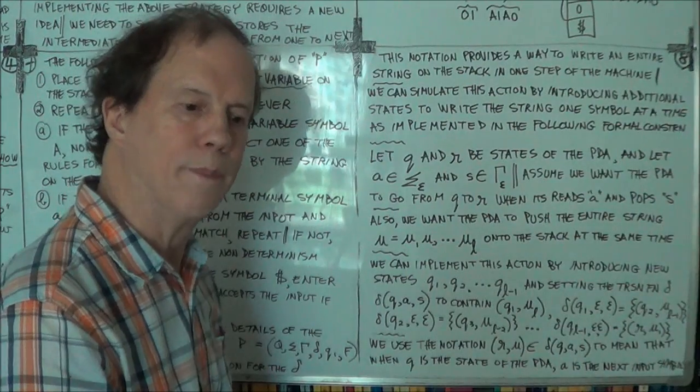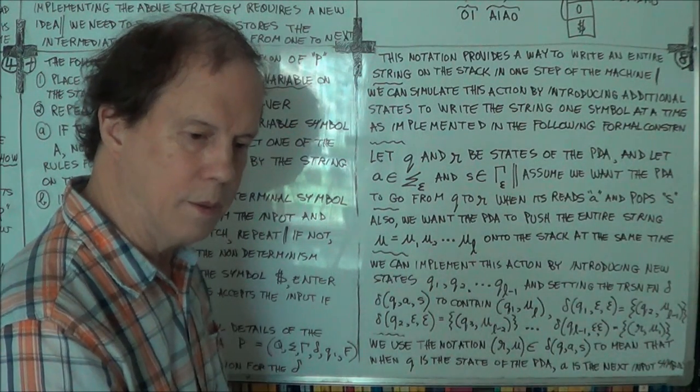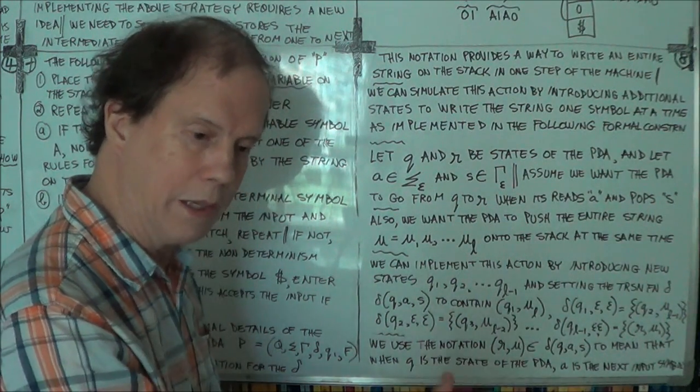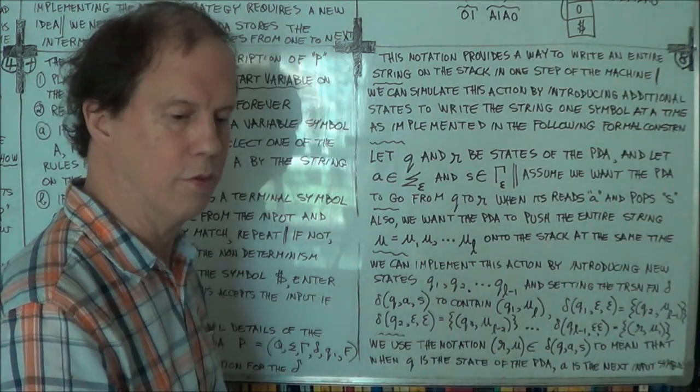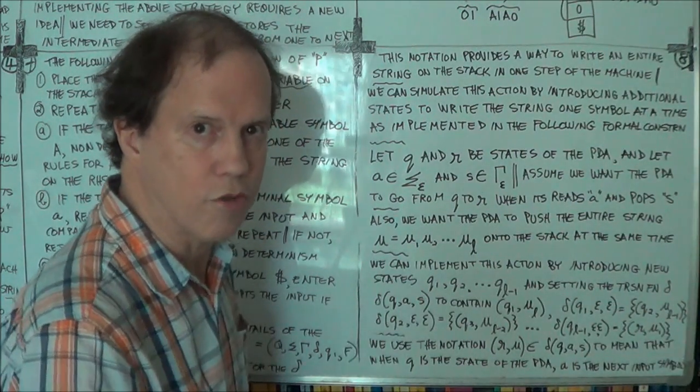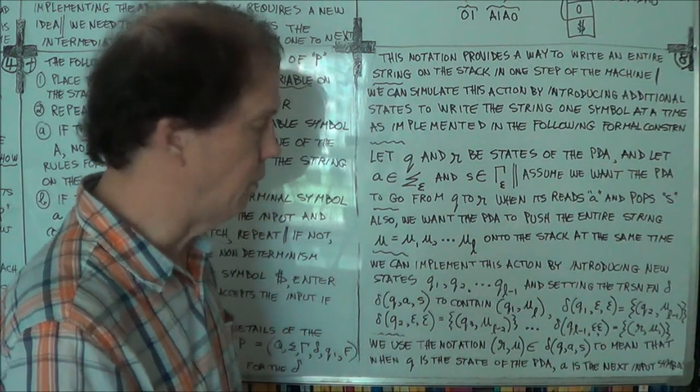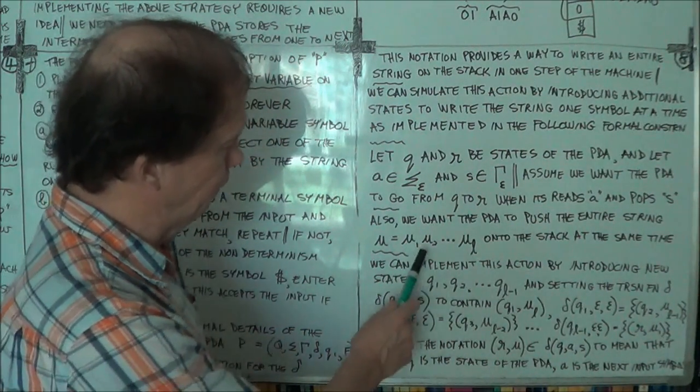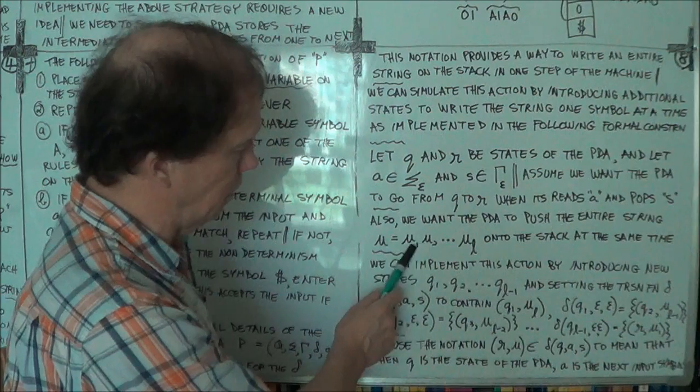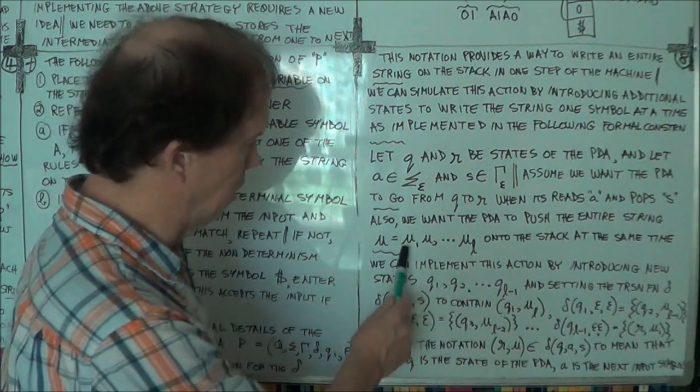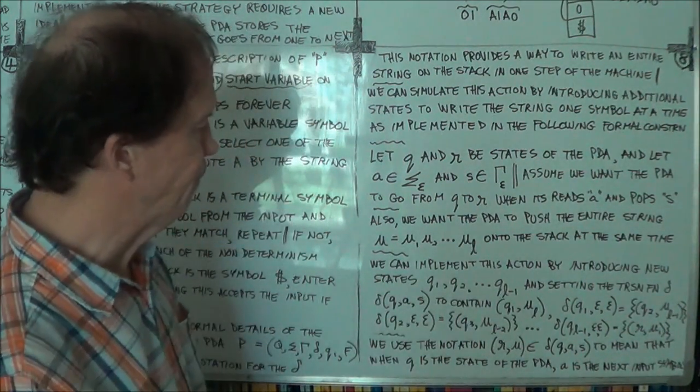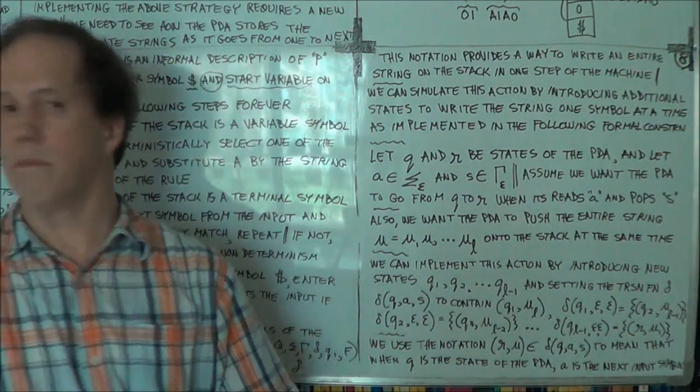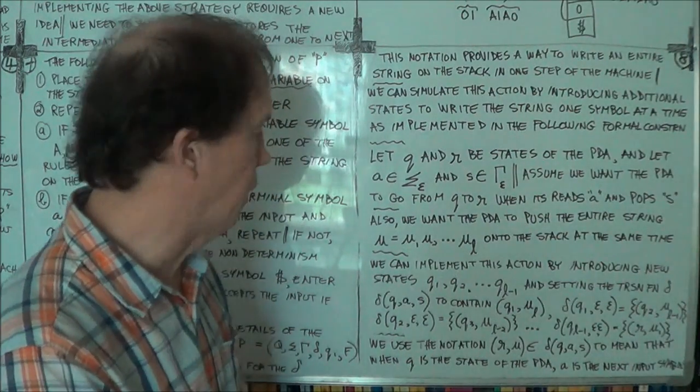Because we're getting the PDA to behave like, to implement, to simulate a substitution rule. And typically the right-hand side of the substitution rule will have a string of symbols. And we want to pop that. I mean, of course we'll check the terminals in the front. But we can put the whole thing on the stack.